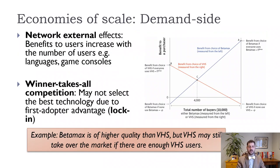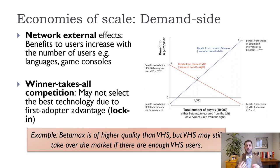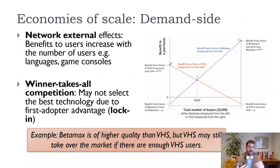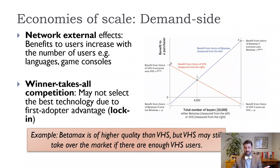There are also issues on the demand side, the most important being the network effect — where something is more valuable the more people use it. Think about Google, Facebook, Instagram — all of these benefit from having more users. It makes sense for me to use whatever you're using. In that case, we end up with a natural monopoly: it makes sense for all of us to use Google, which means advertisers need to advertise on Google, rather than having a third of users on Google, a third on Yahoo, and a third on Bing.